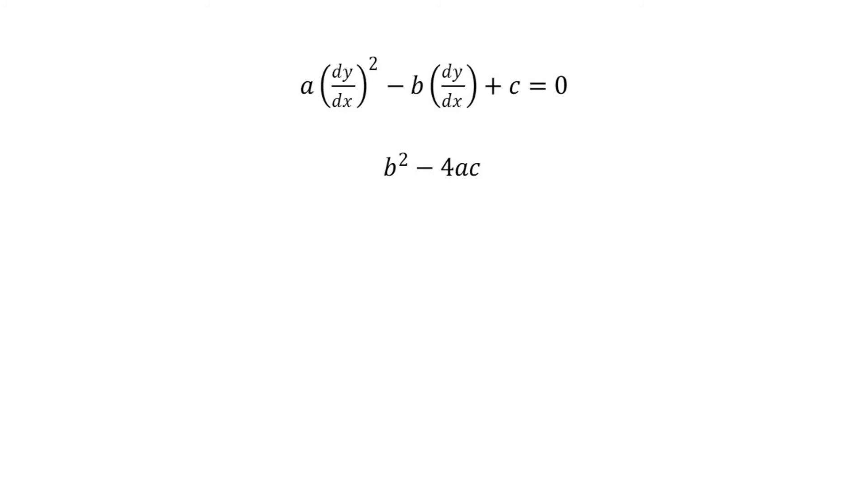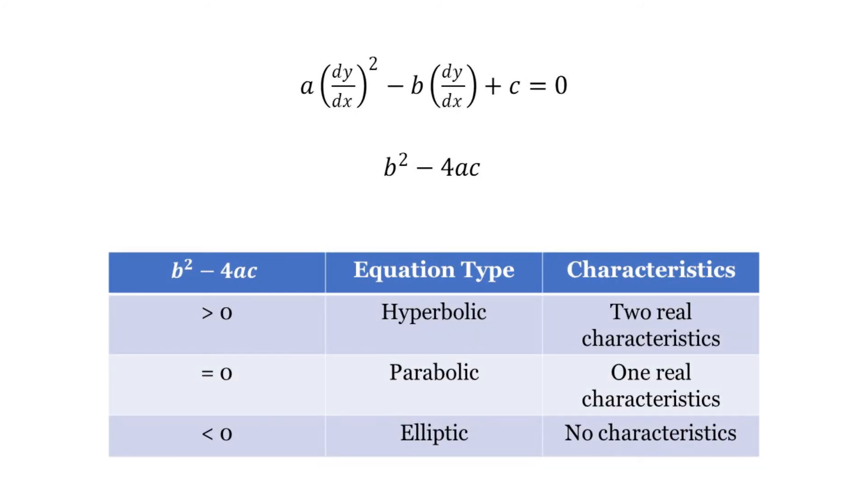If a solution exists, then the equation is a hyperbolic PDE. To determine if a solution exists, we must compute the roots of the following equation. The existence of roots depends on the value of the discriminant, b squared minus 4ac.